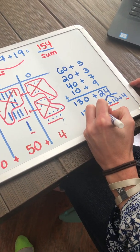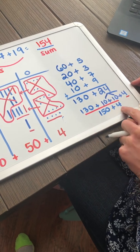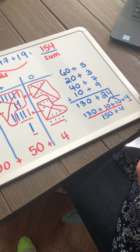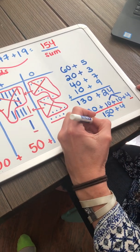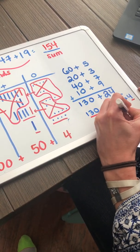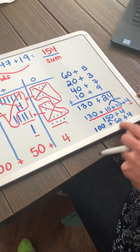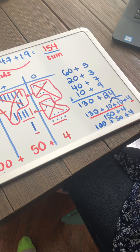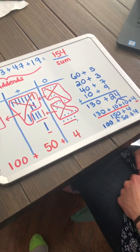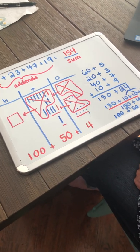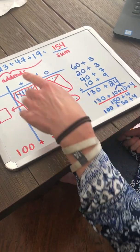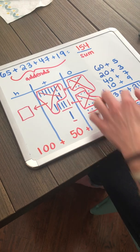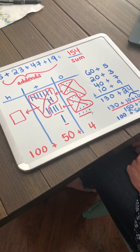I could just add these together and see that my sum is 154. If I want to break it apart, I can decompose it into 150 and 4. But, it still equals 154. So, my sum with these four addends is 154. Now, you are going to practice adding three or four addends using drawings or expanded form.